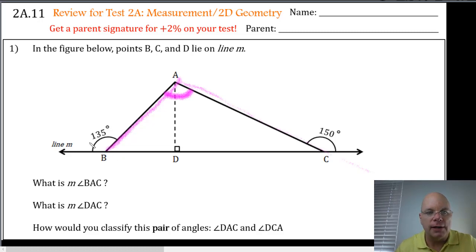This 135 degree angle is an exterior angle. That exterior angle is adjacent and supplementary to this interior angle of the triangle. In other words, this 135 degree angle is supplementary to angle ABD that I just marked right here. So if I use the relationship for supplementary angles and subtract 135 from 180, I get 45 degrees for angle ABD.